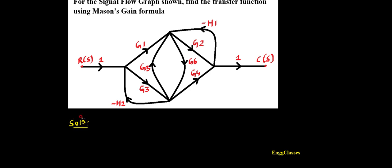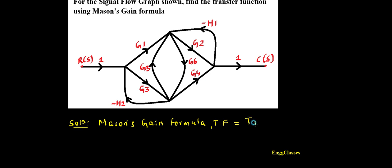What I have to do is write Mason's gain formula. The transfer function using Mason's gain formula is equal to Σ(tk · Δk) divided by Δ. Here k is the number of forward paths, t represents the forward path gains, and Δk and Δ we will go on finding those things.